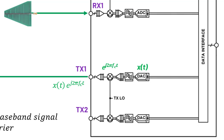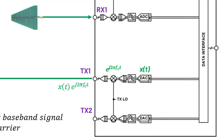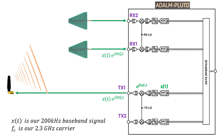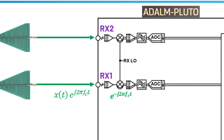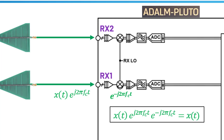As drawn here, that transmit waveform is going to hit RX1 first. And that will appear as X of T times E to the J2π·Fc·T. Then that signal hits RX1's mixer — multiplication by the complex exponential of minus J2π·Fc·T, which shifts it down in frequency. For RX1, this works out great because X of T times E to the J2π·Fc·T times E to the negative J2π·Fc·T just ends up equaling X of T — our baseband signal. That's the RX1 path.